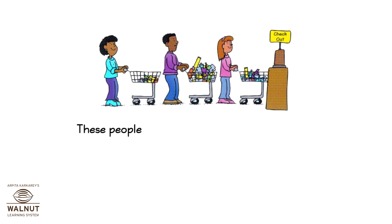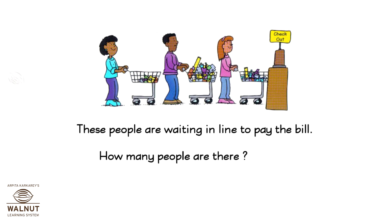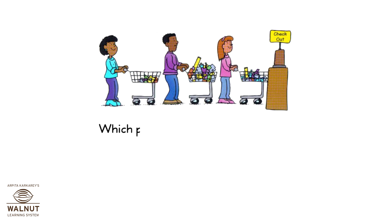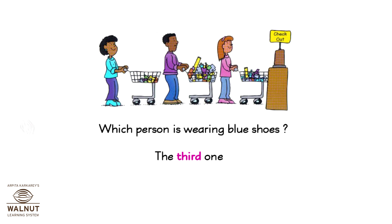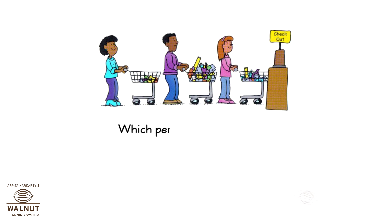These people are waiting in line to pay the bill. How many people are there? 3. Which person is wearing blue shoes? The third one. Which person has brown hair? The first one.